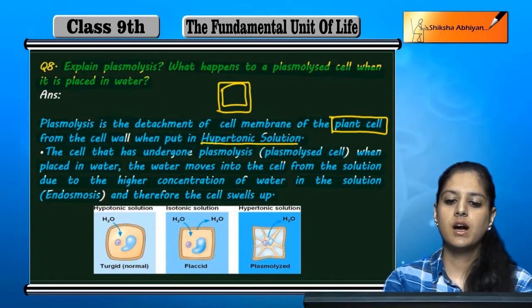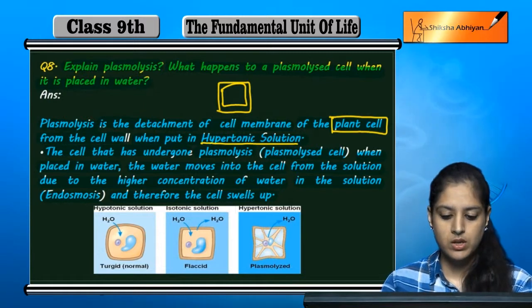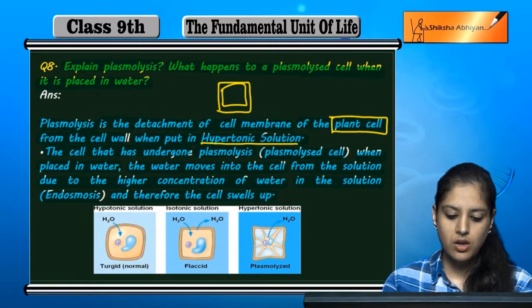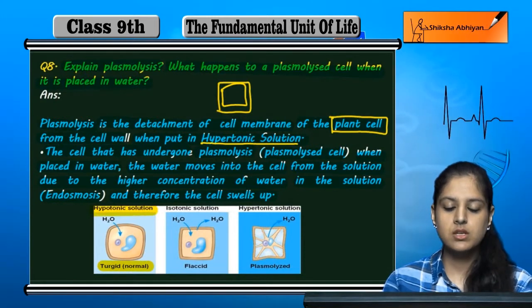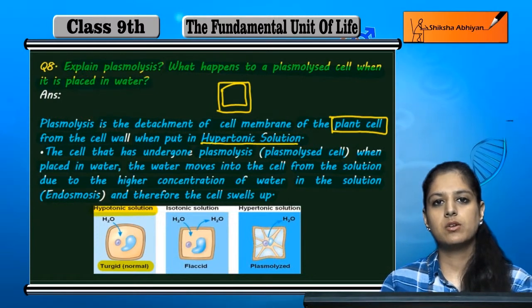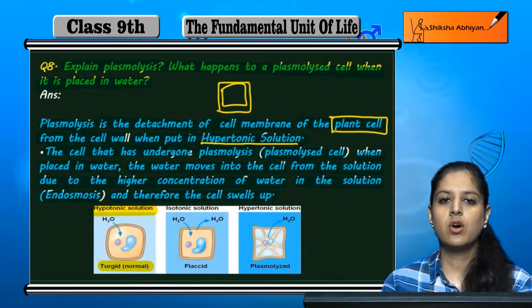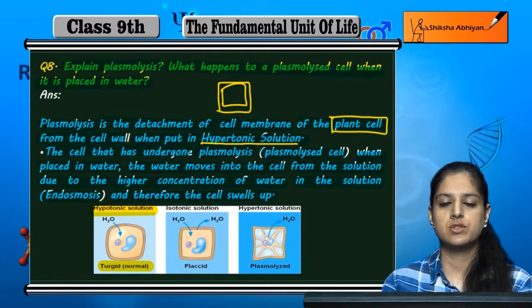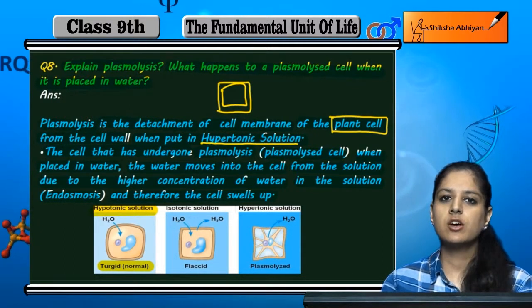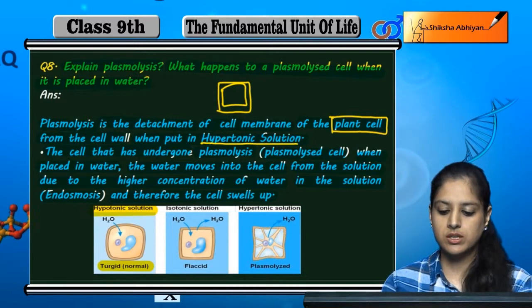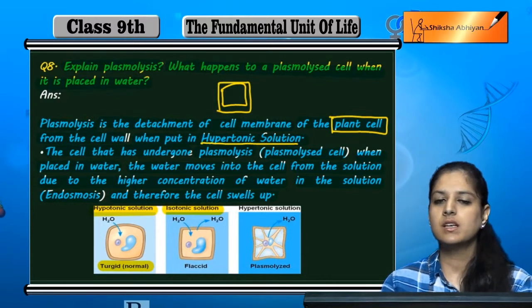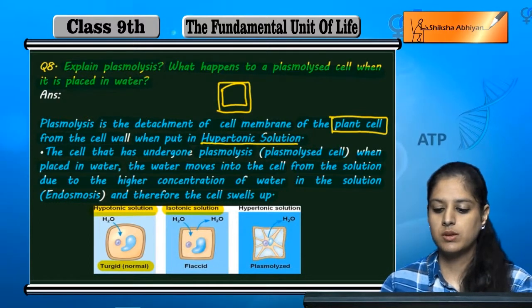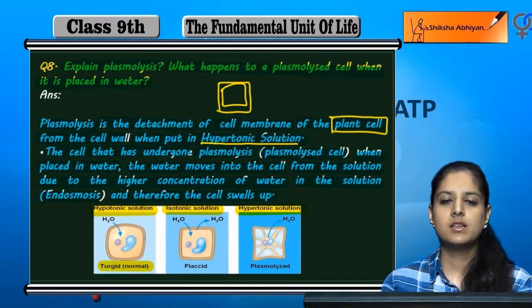Generally, if the cell is plasmolyzed and we place it in a hypotonic solution, the concentration outside is lower. In a hypotonic solution, the cell swells up. If we take an isotonic solution, the concentration is the same, so neither swelling nor shrinkage occurs. But in a hypotonic solution, the concentration is lower and water moves in.